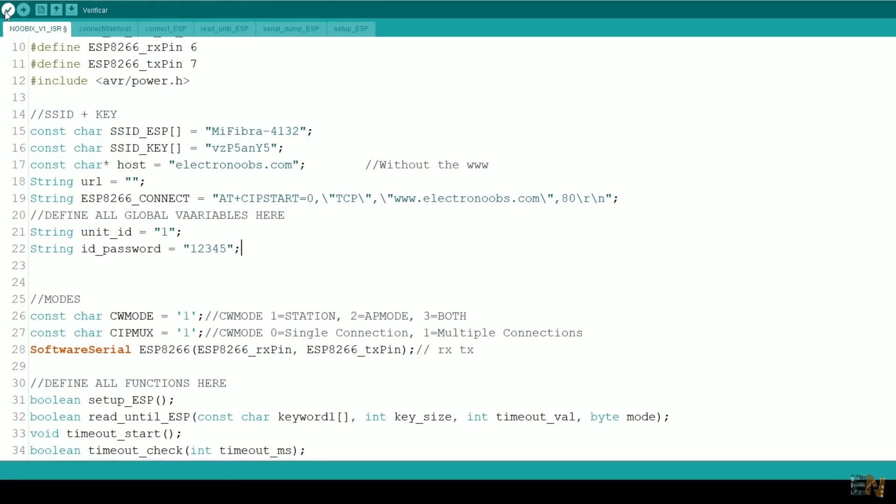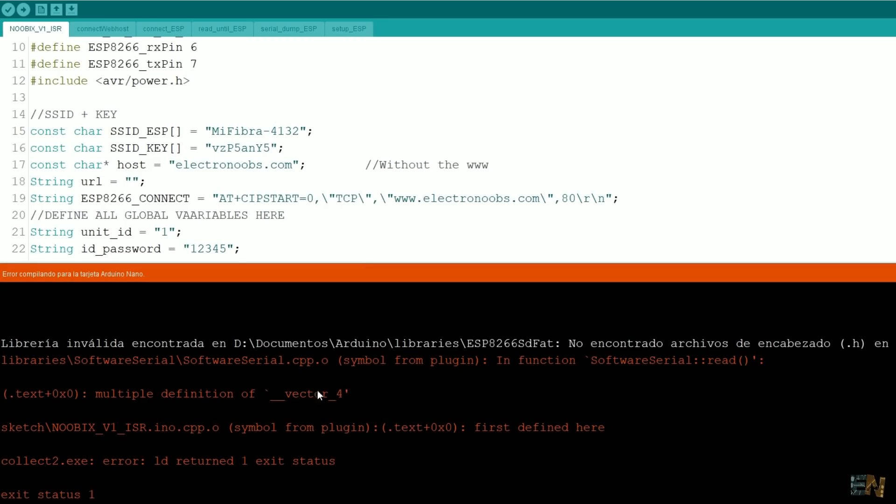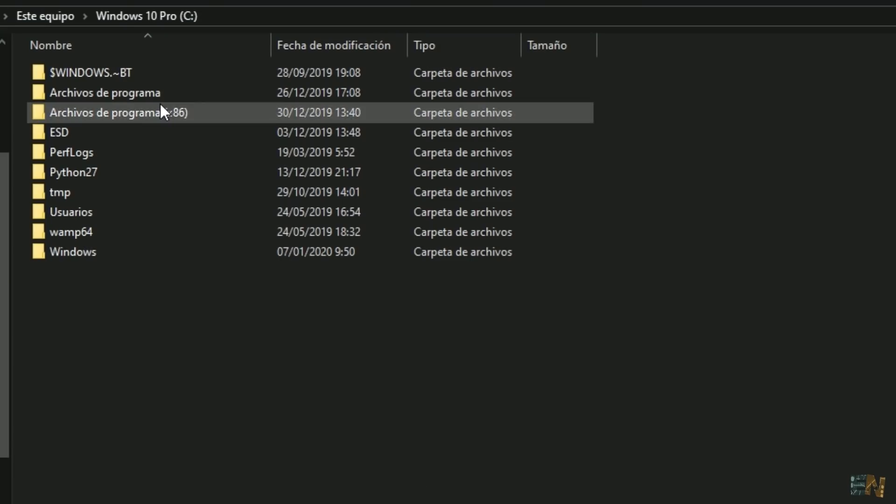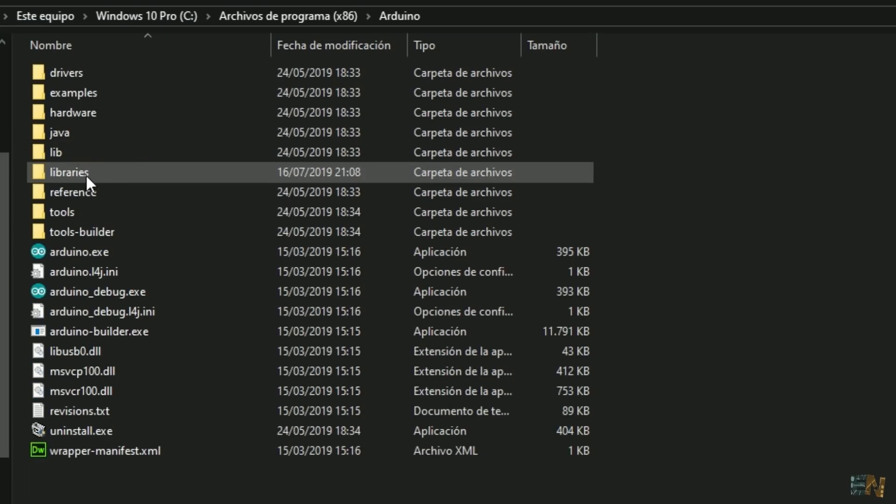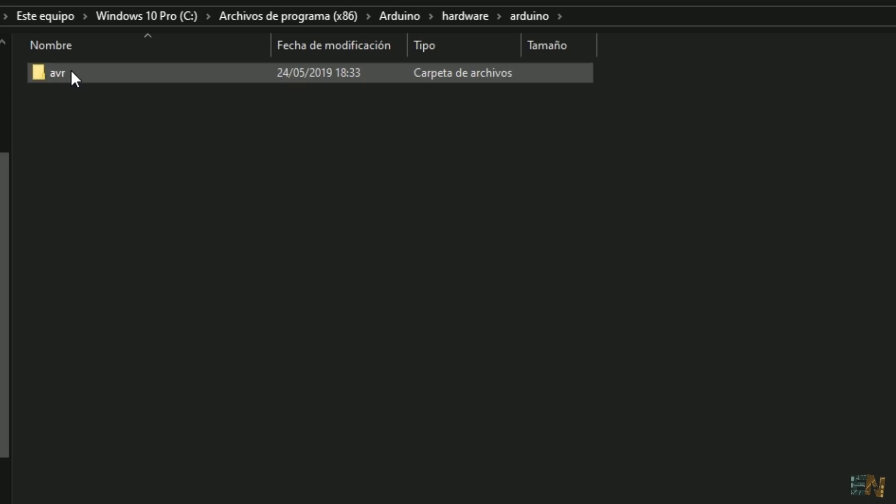If you compile at this moment, you will get an error. That's because the library software serial is not compatible with the sleep library. For that, you have to search the software serial library on your computer. Usually it's in program files, Arduino, hardware, AVR, libraries, and software serial. First, you have to make a backup of the folder in case you mess it up.